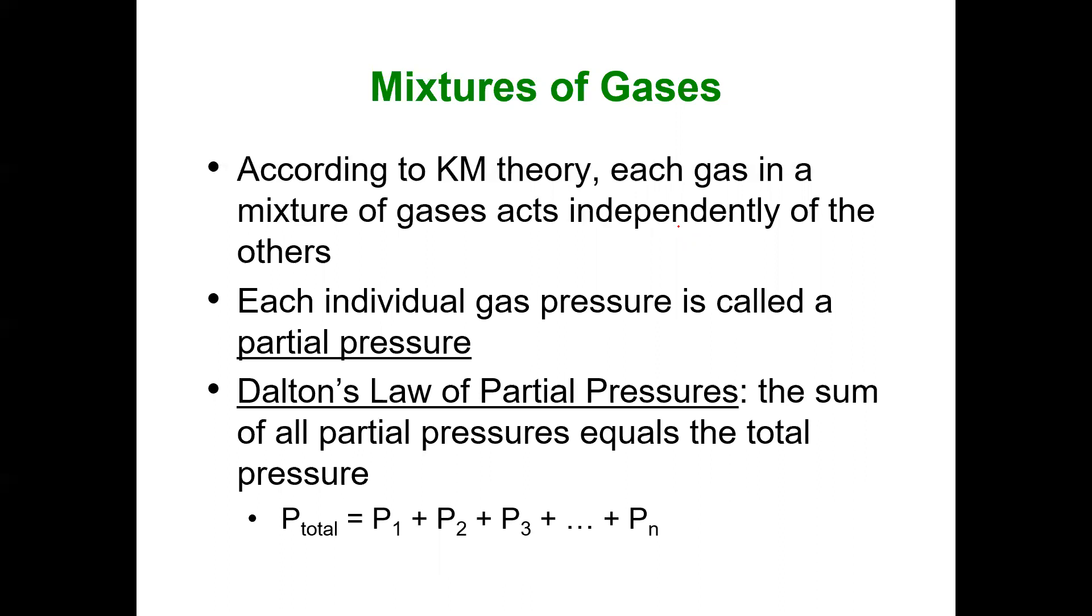Dalton's law of partial pressures is the sum of all pressures exerted from all gases in the mixture to give a total pressure. The reason they write P1 + P2 + P3 dot dot dot is because there can be one gas, two gases, three types of gases, four, and so on. But it's basically the sum of the parts equals the whole.